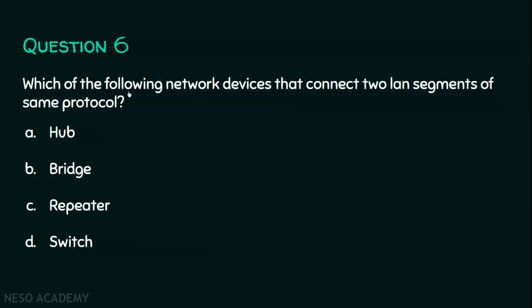Question number six: which of the following network devices connects two LAN segments of the same protocol? Option A: hub. Option B: bridge. Option C: repeater. Option D: switch. Hub and switch are used to establish a local area network, and repeater regenerates the signal of the same network. The answer is option B, bridge, because bridge connects two LAN segments of the same protocol.